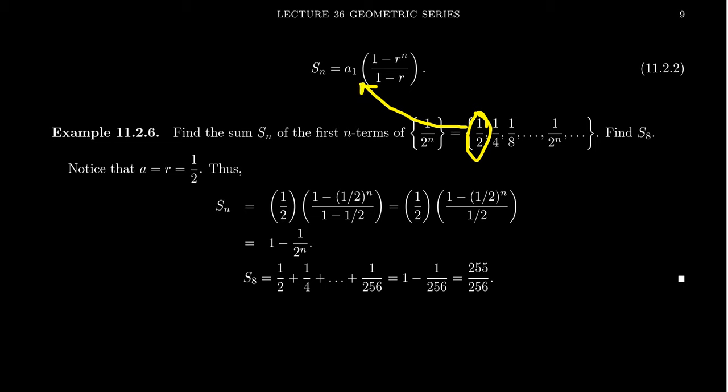But also, if we start taking consecutive terms, 1 fourth divided by 1 half, that equals 1 half. That's the same thing as 1 eighth divided by 1 fourth, et cetera. This is our R value. We're going to plug in R is likewise 1 half.